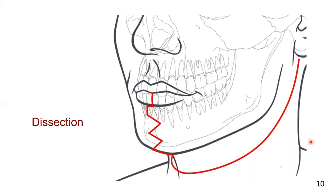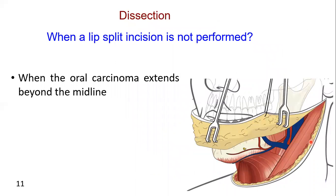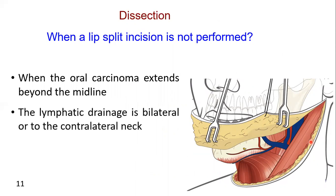Frequently, a resection of an oral carcinoma will be accompanied by a neck dissection. This is commonly performed prior to the resection of the primary oral cavity tumor. When the oral carcinoma extends beyond the midline, or when the lymphatic drainage is bilateral to the contralateral neck, bilateral neck dissections are performed.